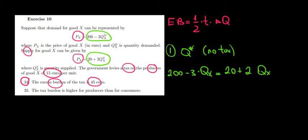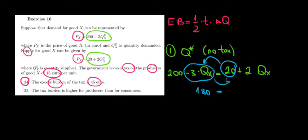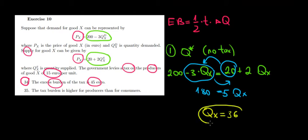Let's take numbers on one side and the variable on the other side and solve. Taking 20 over: 200 minus 20 equals 180, which equals 2Q_X plus 3Q_X — that's 5Q_X. So the equilibrium quantity in this case is 180 divided by 5, which equals 36.